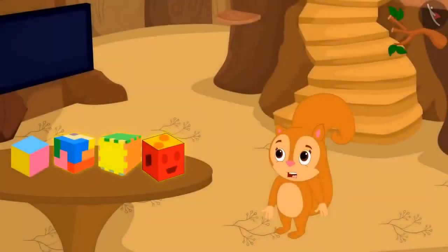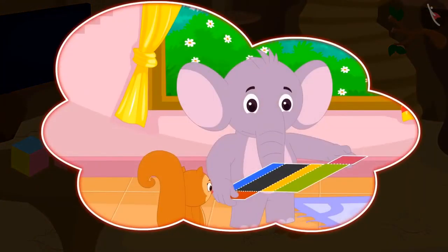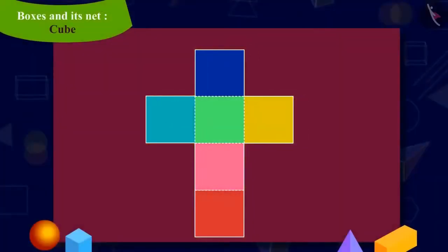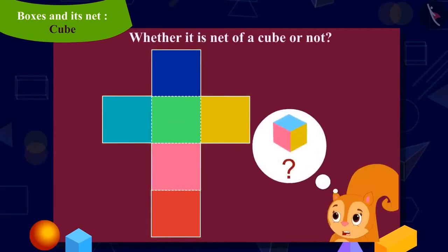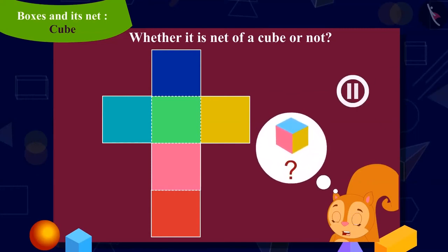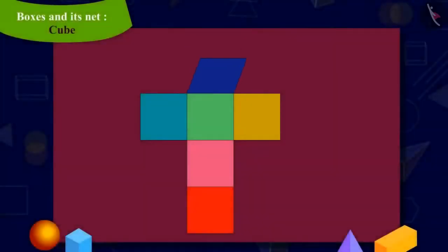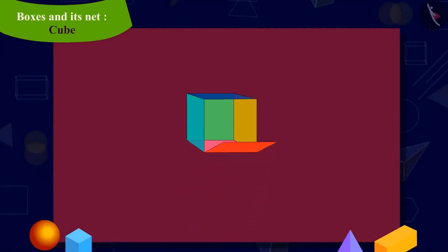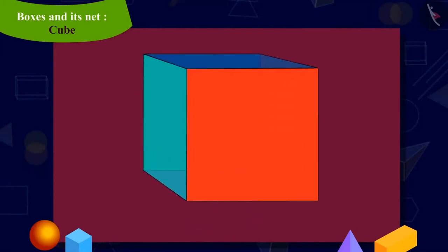Now Chanda has to make three more boxes for the toys. Chanda remembered that Appu told her that more than one net of every three-dimensional shape is possible. Chanda now made a shape like this. Can you tell whether this shape is also a net of a cube or not? You can pause the video to find the answer. Absolutely correct — from this shape also, we can make a cube-shaped box.